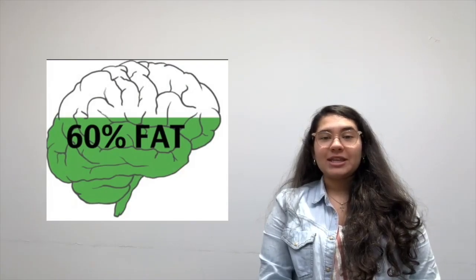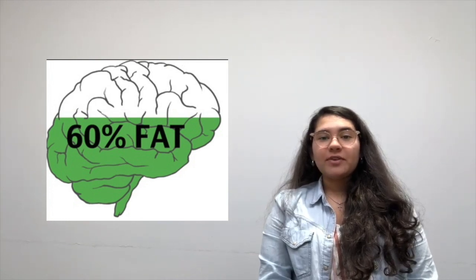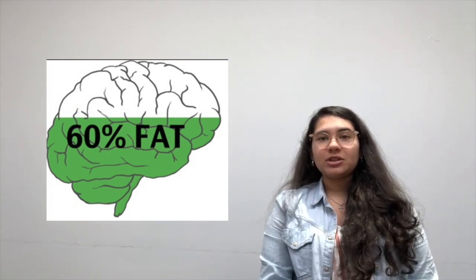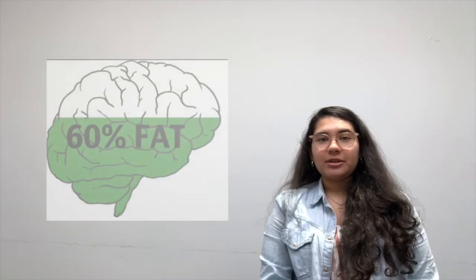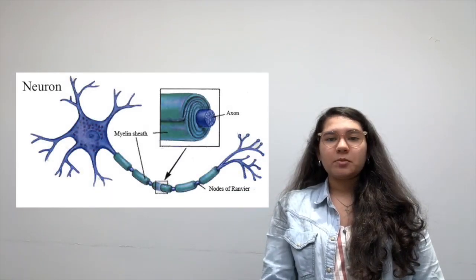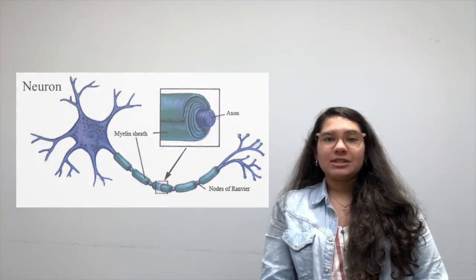Fact number three. 60% of the brain's weight is fat, making it the most fatty organ of the body. 25% of the body's cholesterol, which is crucial for every single brain cell, resides within the brain. This is because neurons are supported by myelin, which is a sheath made up of protein and fatty substances.